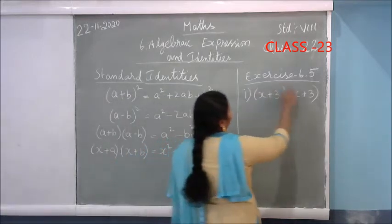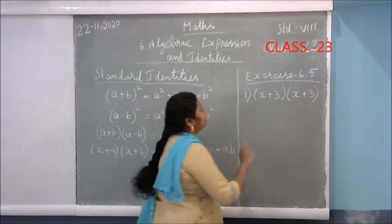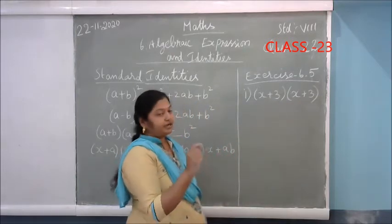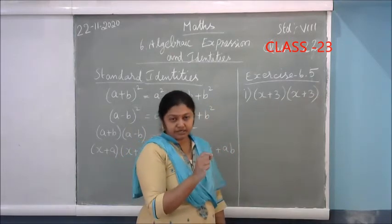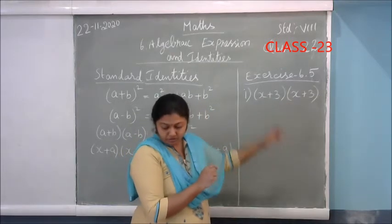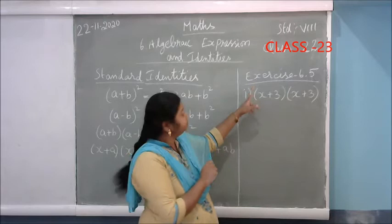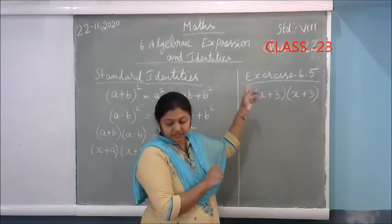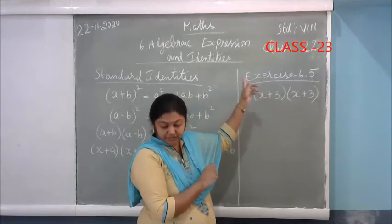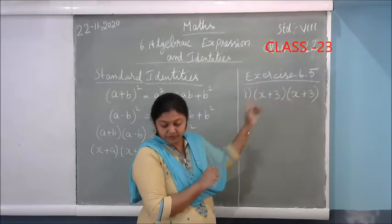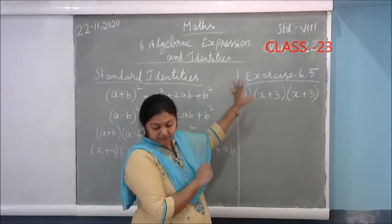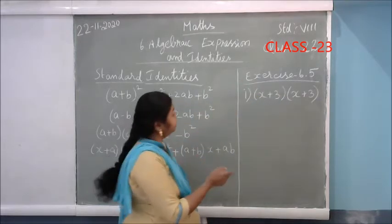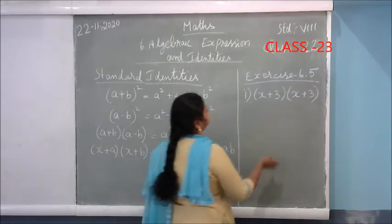In exercise 6.5 the first sum — you have to find out the identities. You have to write the heading; see the textbook and write the heading. After that, write the first sum: (X+3)(X+3).